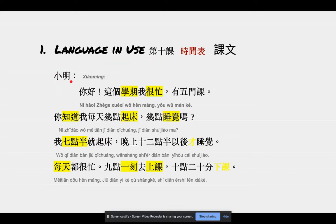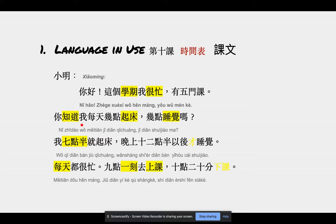This is an email format, and 学文 is writing to 小明. When you're writing email, you put the person's name here — 小明 — and 你好 is the greeting. 这个学期我很忙 means 'This semester I'm very busy.' 有五门课 — 'I have five courses.' 你知道我每天几点起床，几点睡觉吗 — 'Do you know what time I get up and go to sleep every day?' 睡觉 means 'go to bed.'